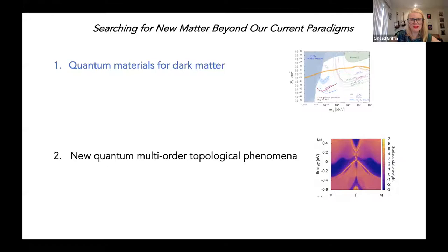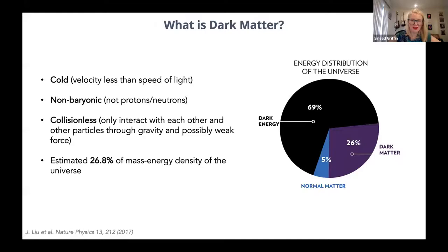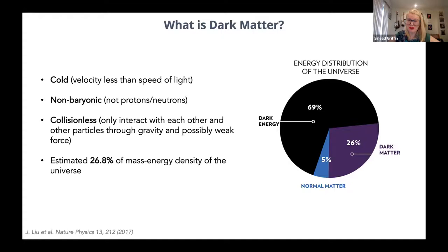Starting with: what is dark matter? On the right-hand slide I have a simple pie chart of the energy distribution of the universe, garnered from cosmological and astronomical observations. Normal matter — the matter we deal with in the Materials Project — only makes up five percent of the energy distribution of the universe. There's five times the amount of dark matter in the universe than there is normal matter, so we're dealing with a huge amount of unknown matter.